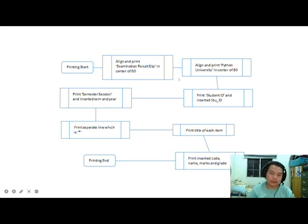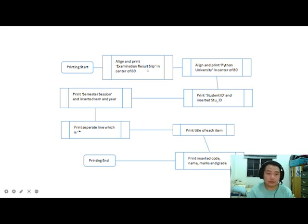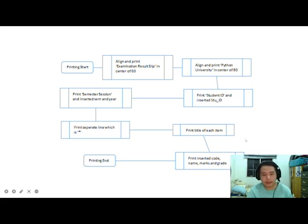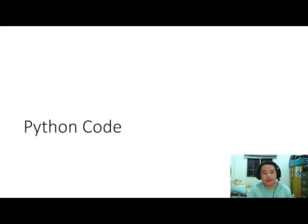The last algorithm is how we print out the outcome. We align the examination result slip heading in the center, followed by 'Python University', the student ID on the left, the semester session, and we separate sections with the star symbol. Then we print out the column titles, insert the code, name, marks, and grade, and the printing session ends. Now we move on to the Python code.